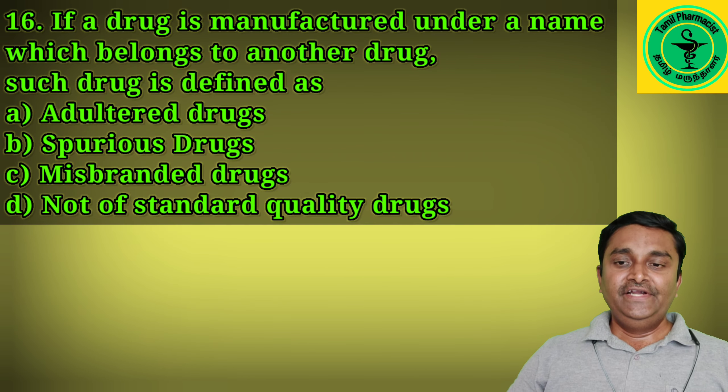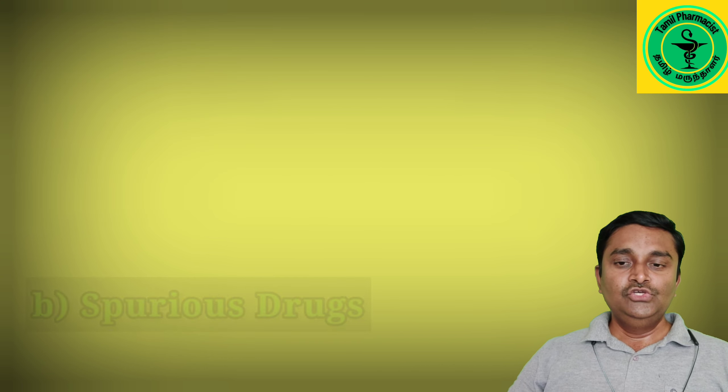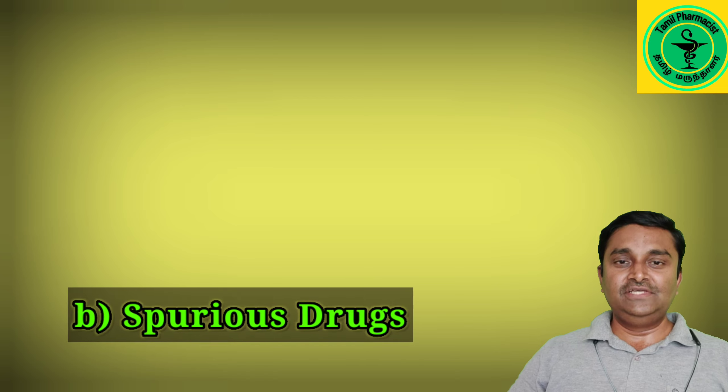If a drug is manufactured under a name which belongs to another drug, such a drug is called a spurious drug.